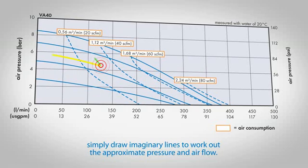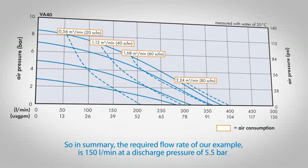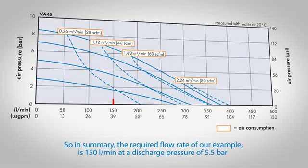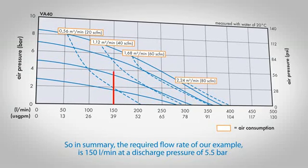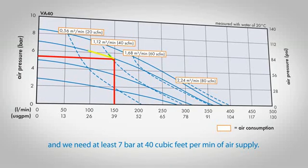So in summary, the required flow rate of our example is 150 liters per minute at a discharge pressure of 5.5 bar, and we need at least 7 bar at 40 cubic feet per minute of air supply.